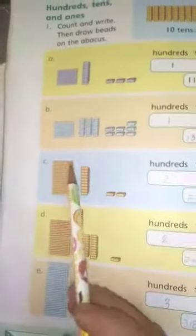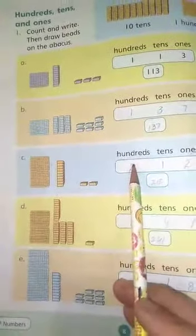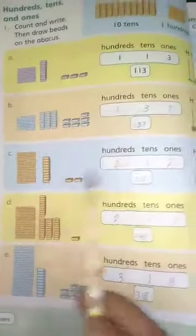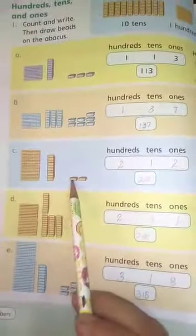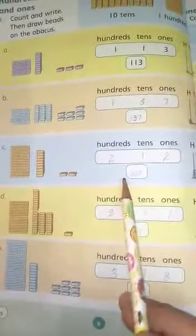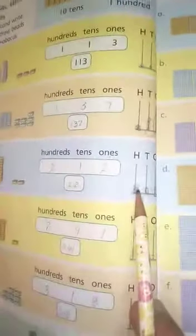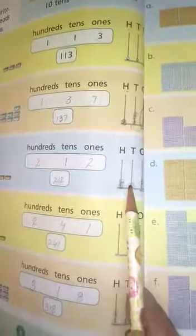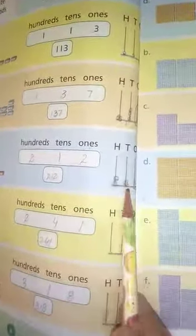Next C, hamare paas 100 kitnay hai? 1, 2. 200. And tens kitnay hai? 1. And ones kitnay hai? 1, 2. 2 ones equals 212. Ab hundreds mein abacus mein hundreds mein 2 beads draw karenge. Tens mein 1 bead draw karenge. And ones mein 2 beads draw karenge. Next aapne dono aisi karne hai. Next page number 9.